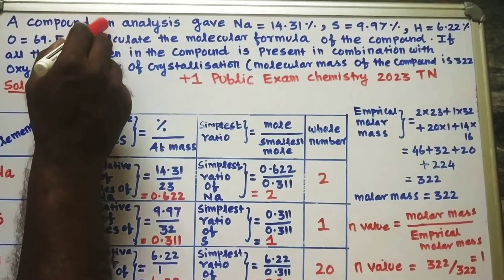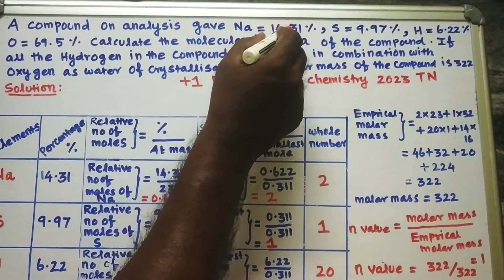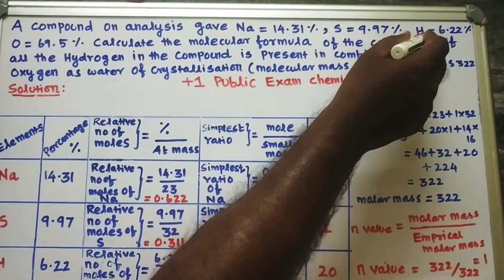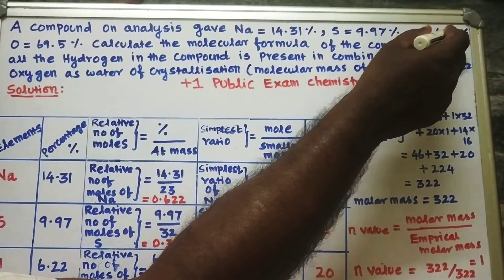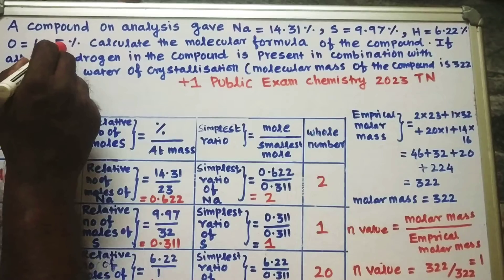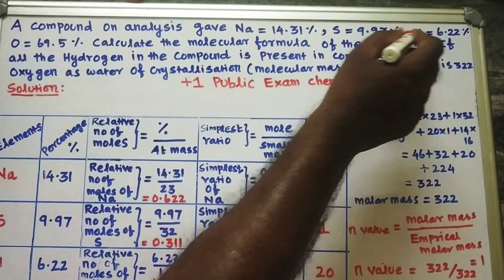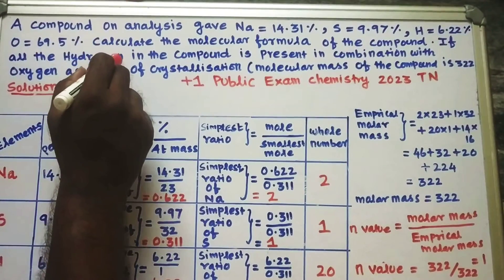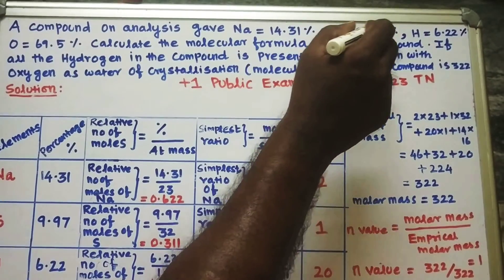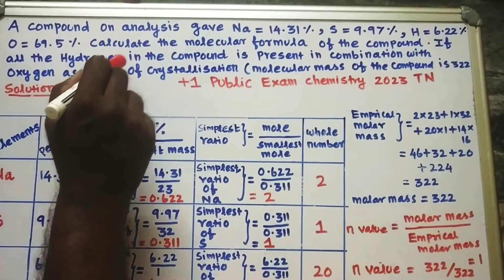A compound on analysis gave sodium 14.31%, sulfur 9.97%, hydrogen 6.22%, oxygen 69.5%. Calculate the molecular formula of the compound if all the hydrogen in the compound is present in combination with oxygen as water of crystallization.